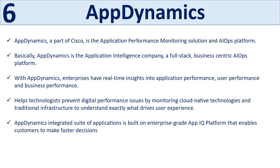The sixth tool is AppDynamics, part of Cisco — an application performance monitoring solution and AIOps platform. AppDynamics is a full-stack, business-centric AIOps platform that gives enterprises real-time insights into application performance, user performance, and business performance. It helps technologists prevent digital performance issues by monitoring cloud-native technologies and traditional infrastructure to understand exactly what drives user experience. AppDynamics' integrated suite of applications is built on the enterprise-grade App iQ platform, enabling customers to make faster decisions.